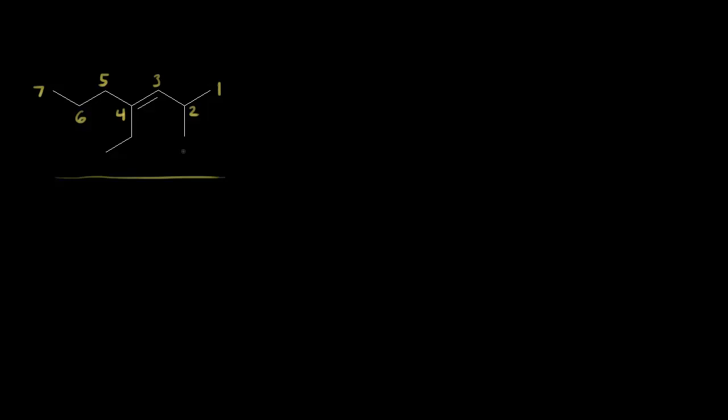How do we incorporate the EZ system into IUPAC nomenclature? Let's name this alkene. We find the longest carbon chain that includes our double bond and give the lowest number possible to our substituents. Starting from the right side: carbon one, two, three, four, five, six, and seven. A seven-carbon alkene is heptene, and our double bond starts at carbon three — so we write 3-heptene.